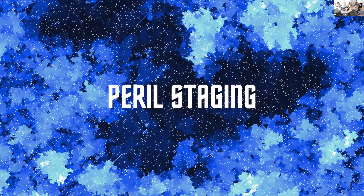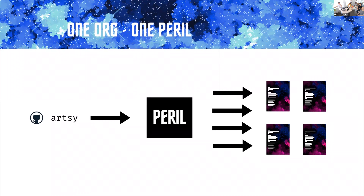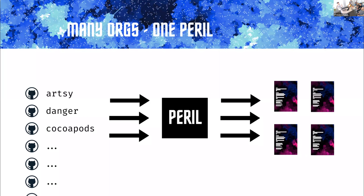We have some example ones. Artsy's Danger setup is pretty big and you can go look at how all that works. That gives you a sense of what config looks like, what those config repos are, and how they come together. Peril Staging is what Artsy uses. This was the original abstraction — you have one organization, it has one Peril, and it evaluates many Danger files. Peril Staging is the idea of having many organizations talk to a single Peril that evaluates many different JavaScript files.